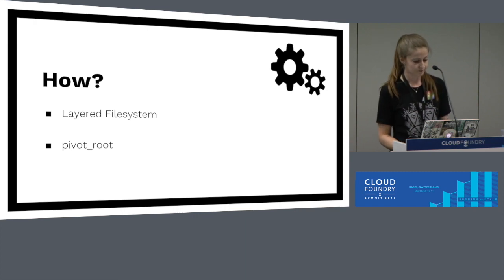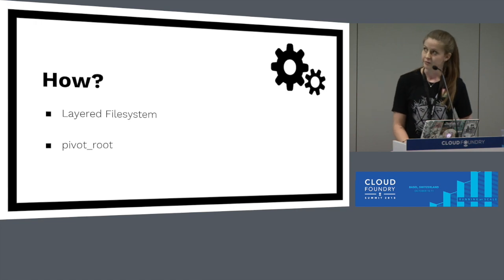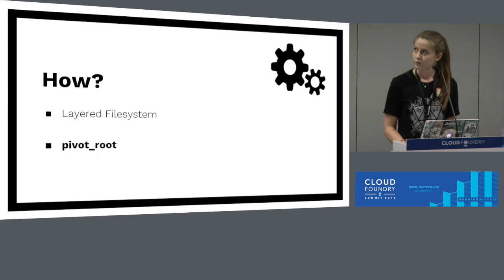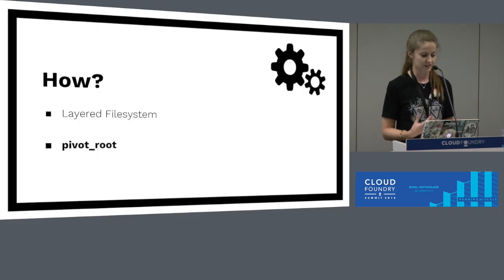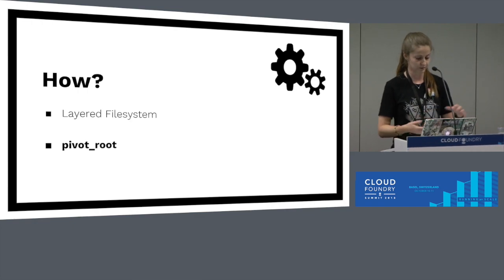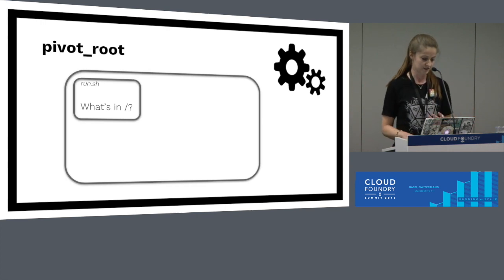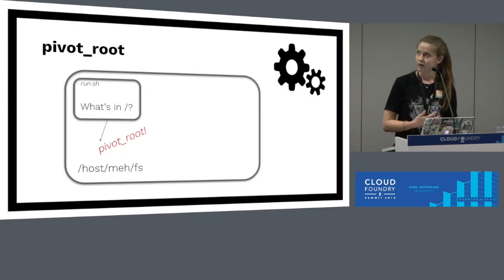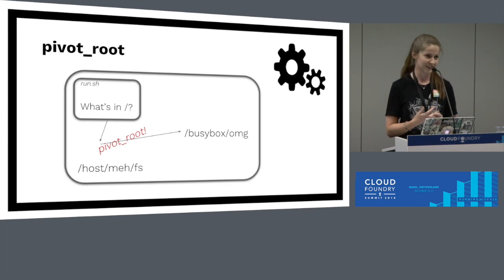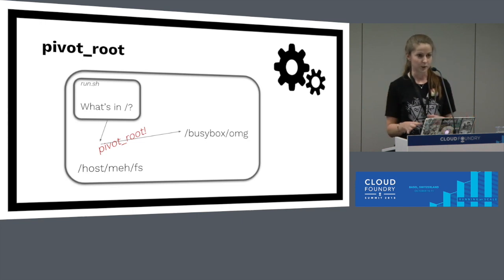To handle dependencies and encapsulation, we use a layered filesystem and pivot_root. Pivot_root is a system call which changes what a process sees when it looks at its root directory. Instead of seeing the host file hierarchy, we can tell the container process to see somewhere else as its root filesystem. For example, if you had a program that asks "what's in slash?", what comes back is whatever is on the host — something boring. But we can do pivot_root with a path to somewhere else, and this time what comes back is something much more exciting — a container root filesystem like BusyBox.